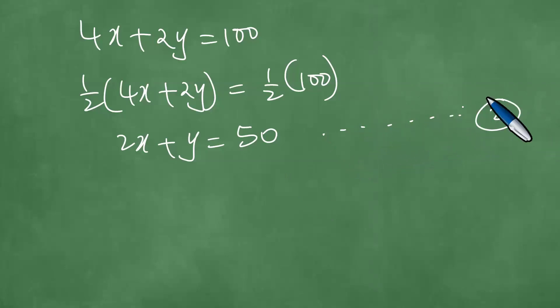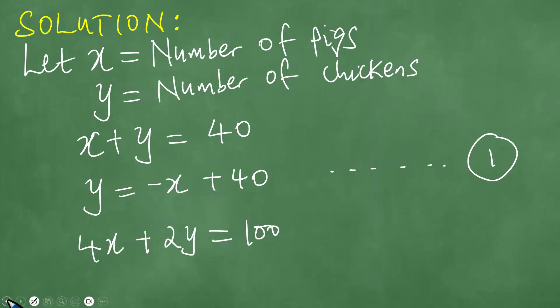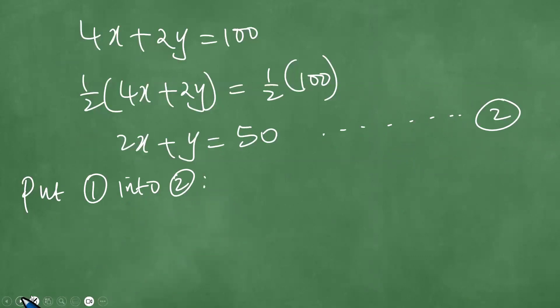And we proceed to put one into two. Let us put equation one into equation two. And equation one is Y equals minus X plus 40. So we have 2X plus Y equals minus X plus 40, which is equal to 50.